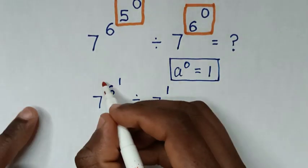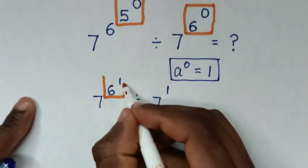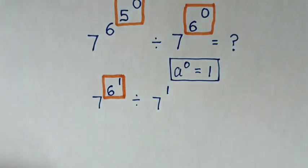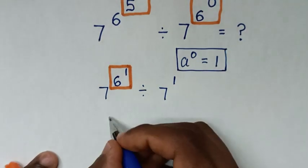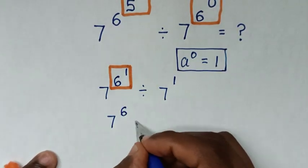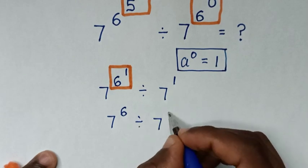From here 6^1 is 6. So in here I will substitute 6. Then it will be 7^6 ÷ 7^1.